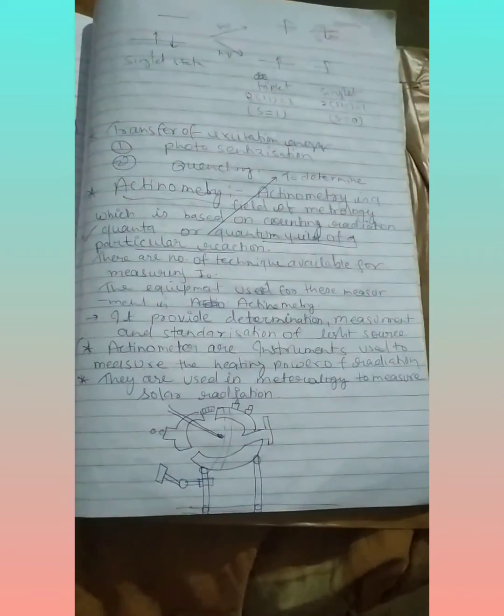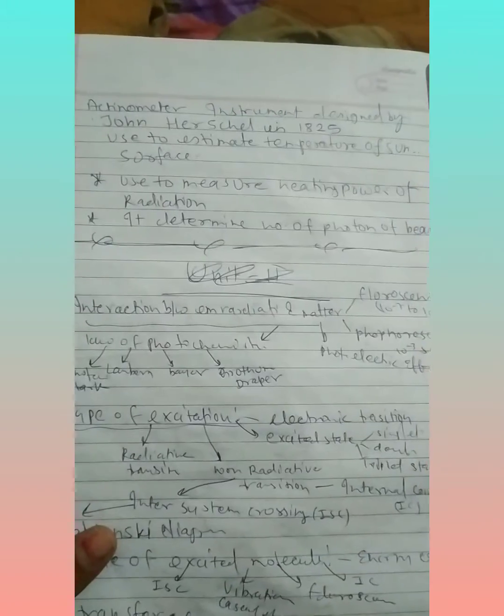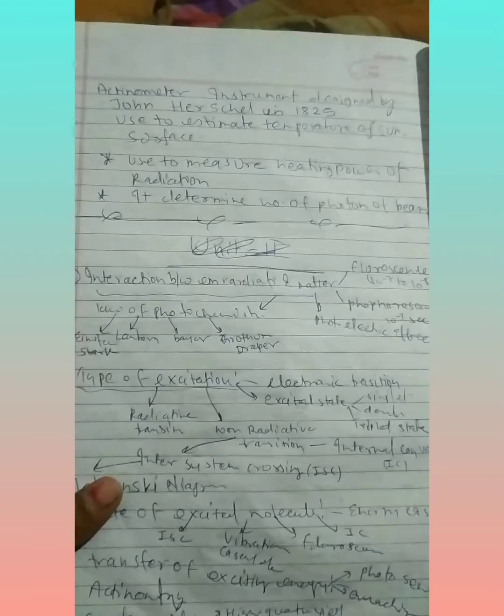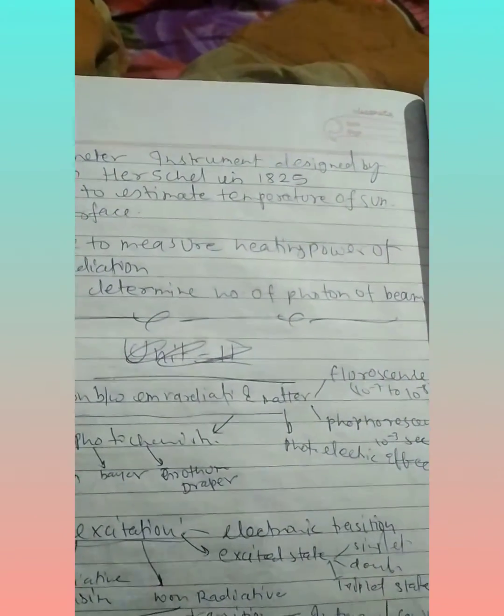This is a diagram of actinometry device. It was designed by John Herschel in 1825. It is used to measure temperature of sun surface and to measure heating power of radiation and many other uses.